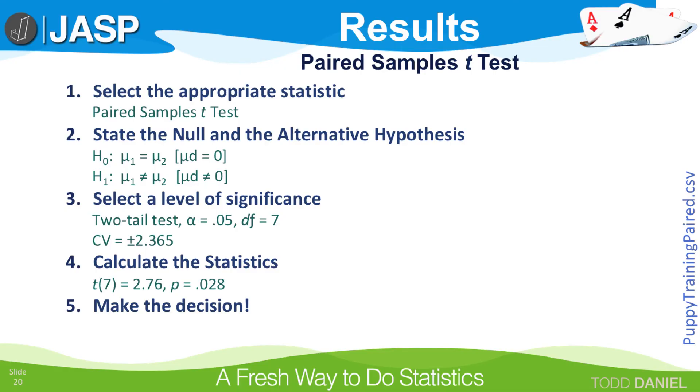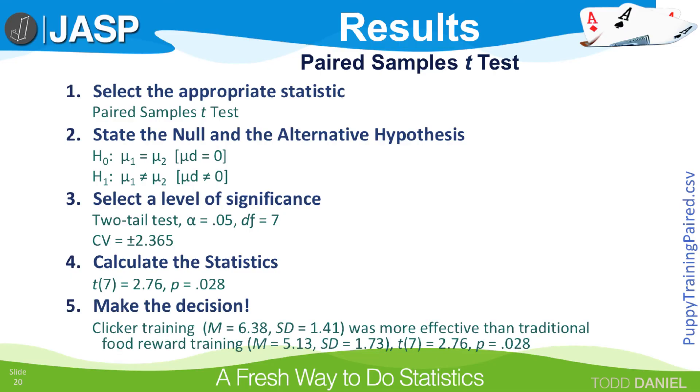Finally, Step 5, make the decision. Clicker training was more effective than traditional food reward training. Notice that I list the means and standard deviations for each group and the full write-up for the t-test.